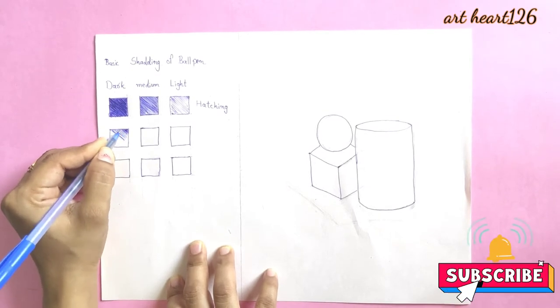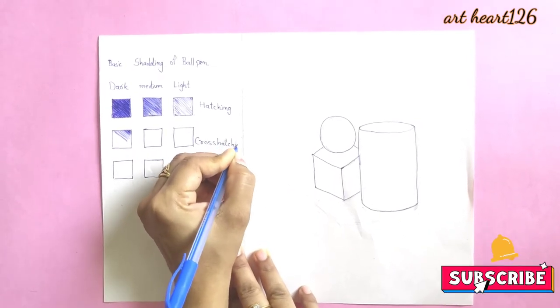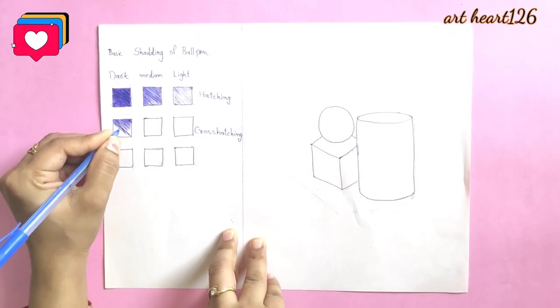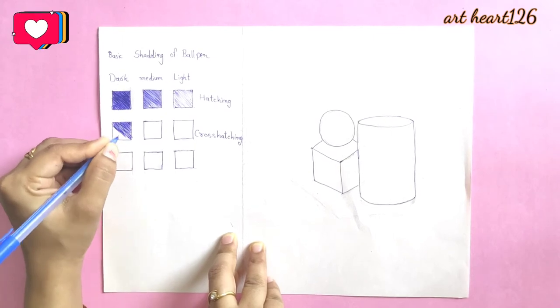Now let's do cross hatching. It's also easy but you have to work patiently. Draw lines with pressure and closely as explained before.